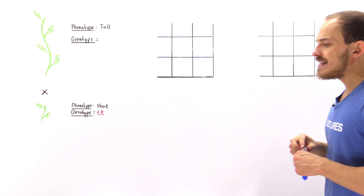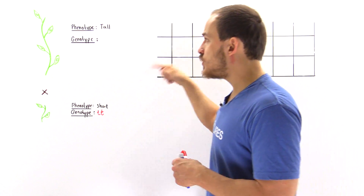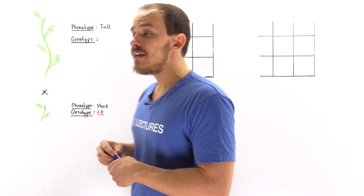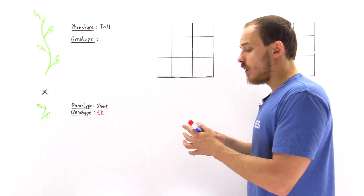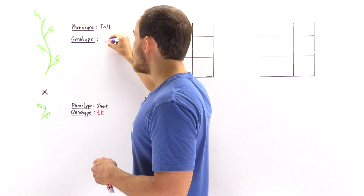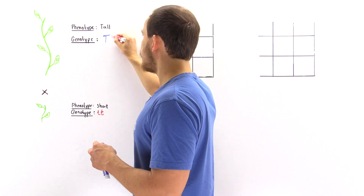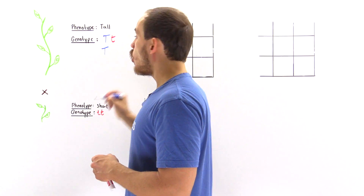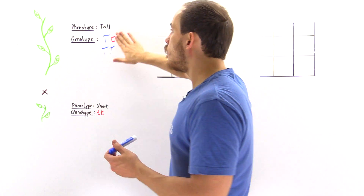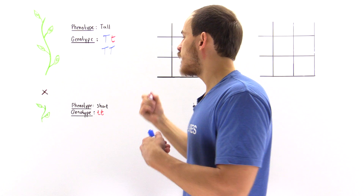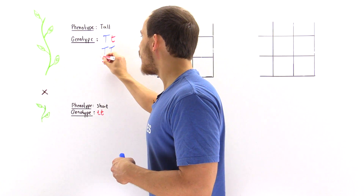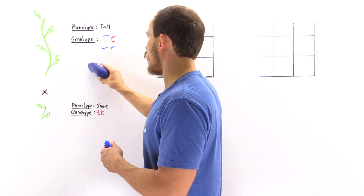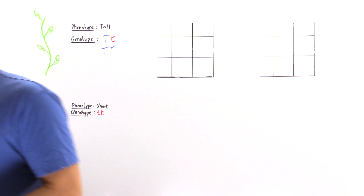The first question is: what are all the possibilities for a genotype that will produce a tall phenotype? There are two possibilities — it's either heterozygous tall (uppercase T, lowercase t) or homozygous dominant tall (uppercase T, uppercase T). Both of these genotypes will produce a tall phenotype. Lowercase t, lowercase t will produce a short phenotype, which is why we can cross that one out and narrow it down to one of these two cases.